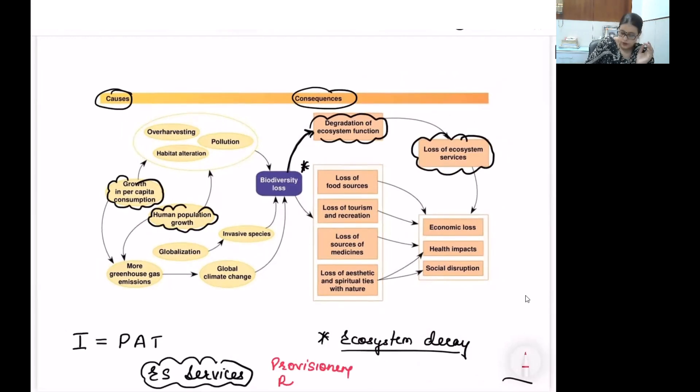Ecosystem services include provisioning, regulating, cultural, and supportive services. Once I highlight these ecosystem services, I am talking about a massive loss that we humans are suffering. Understanding ecosystem services loss helps create awareness about ecosystem restoration.